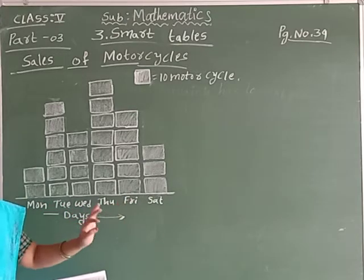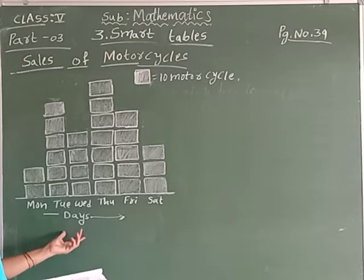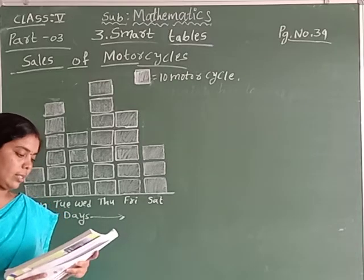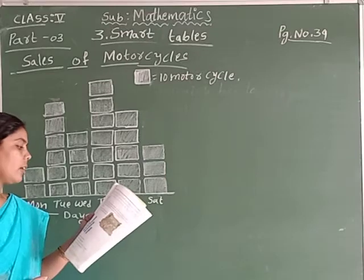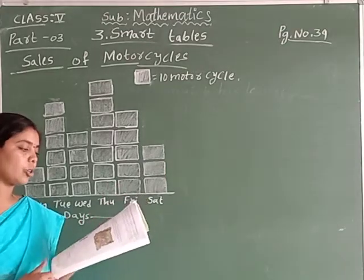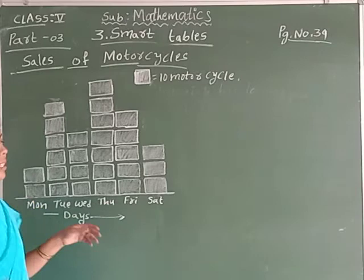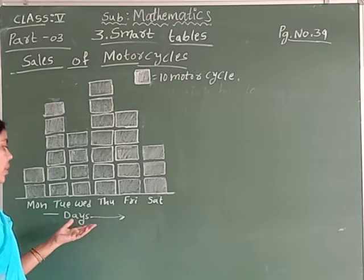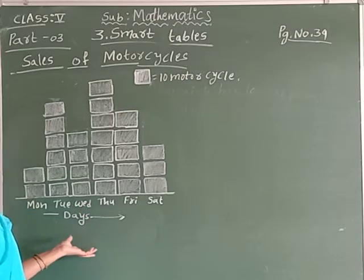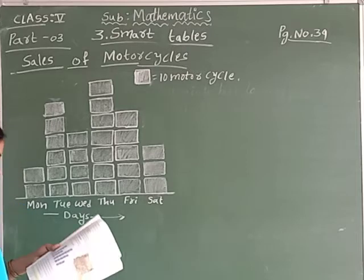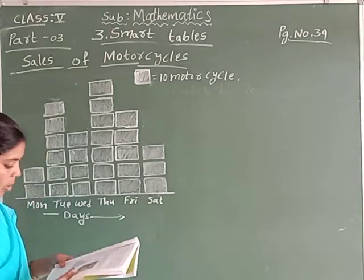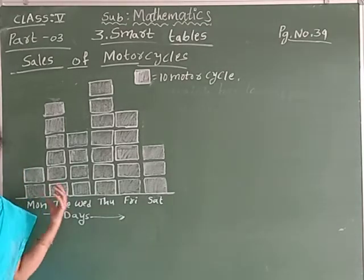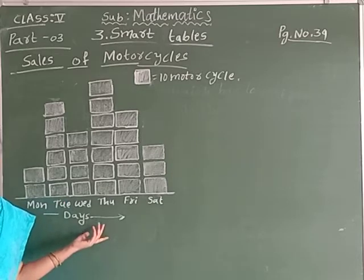Now, sales of motor cycles. See here on page number 39 — a motor cycle company dealer shows the sale of motor cycles in a week in the box chart given below. Monday to Saturday — Monday, Tuesday, Wednesday, Thursday, Friday, Saturday. In a week, how many motor cycles are sold? The dealer shows sales details for each day.